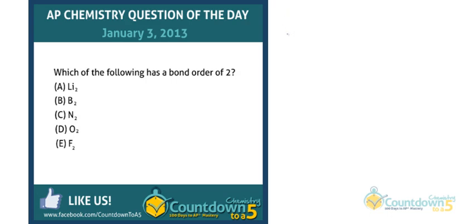If you remember, bond order indicates whether it's a single, double, or triple bond. So, bond order of 1 would be a single bond, bond order of 2 double, and bond order of 3 triple.